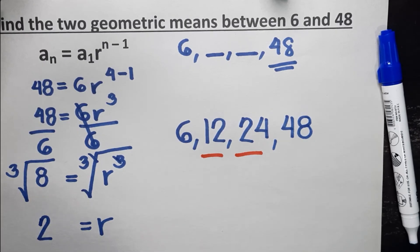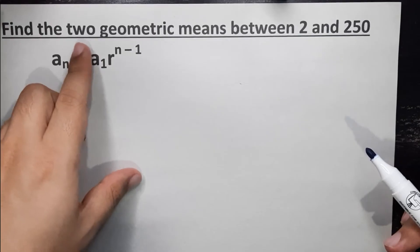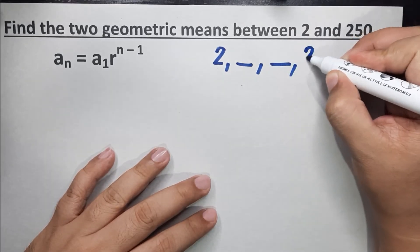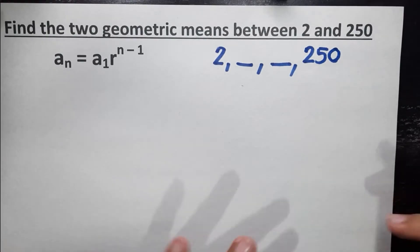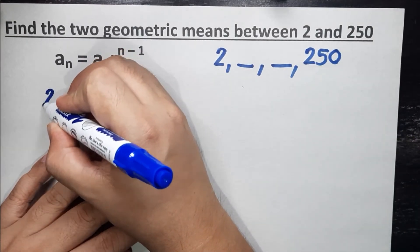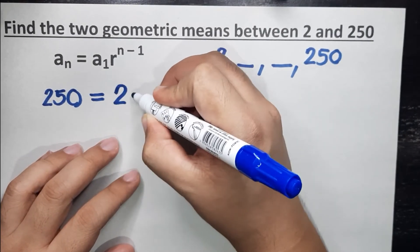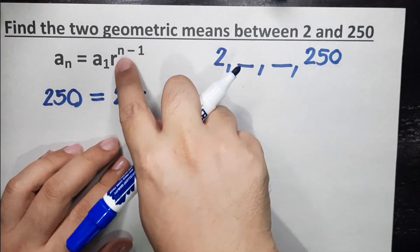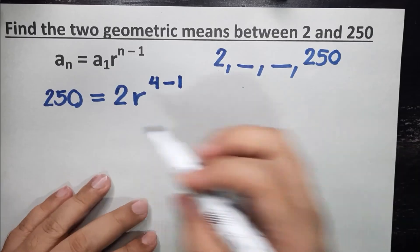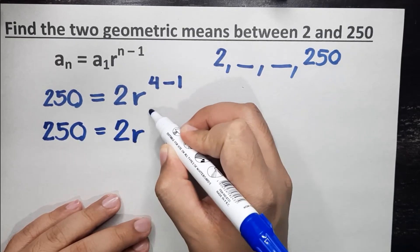Let's proceed to our second example: find the two geometric means between 2 and 250. We still have two geometric means, so there will be two missing terms between 2 and 250. Going back to the formula: a sub n is the last term, so we have 250, which is equal to the first term, which is 2, times r — the unknown we're looking for — raised to 4 minus 1, since the number of terms is 1, 2, 3, 4. So 250 is equal to 2r raised to the power of 3.